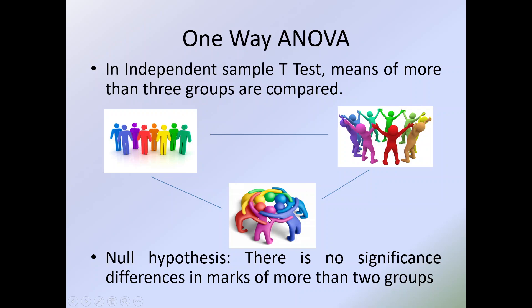The null hypothesis for ANOVA is there is no significant difference in marks of more than two groups. Now the alternative hypothesis is a little bit tricky. We are not writing that there is a significant difference in marks of more than two groups, because the difference can be between this group and this group, or this group and another group.